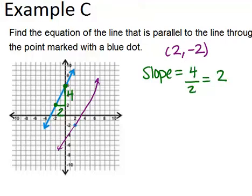So that means my equation for the new line, the purple line, is going to be y equals 2x plus something, b. We don't know the y-intercept yet. What we could do is use the graph to figure out where the y-intercept has to be.